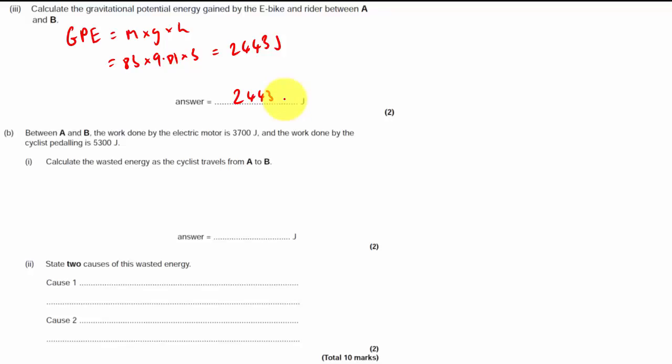Between A and B the work done by the electric motor is this many joules and the work done by the cyclist pedaling is this many joules. Calculate the wasted energy as the cyclist goes from A to B. They're really setting us up for the last bit of the question which is what are the causes of wasted energy. So the cyclist and the bicycle, sorry, the electric motor and the cyclist are both doing some work.